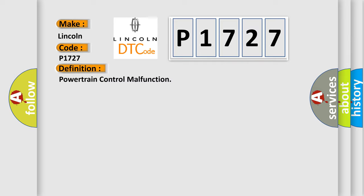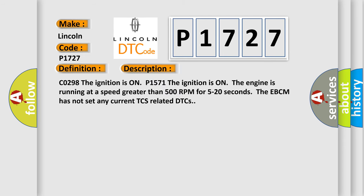And now this is a short description of this DTC code. CO298 The ignition is on P1571 The ignition is on the engine is running at a speed greater than 500 rpm for 5 to 20 seconds. The EBCM has not set any current TCS related DTCs.